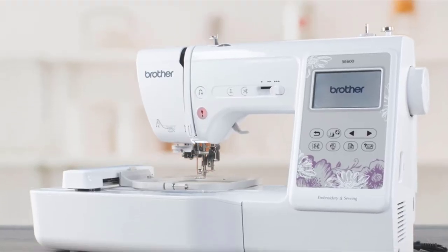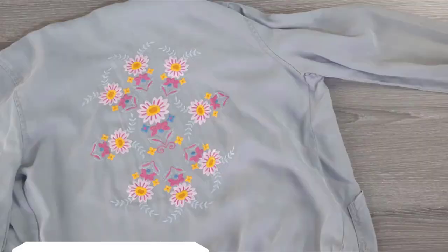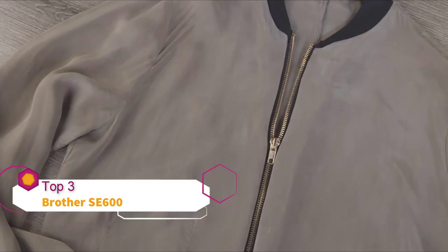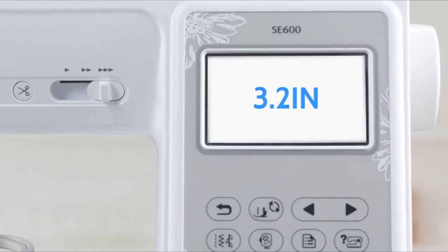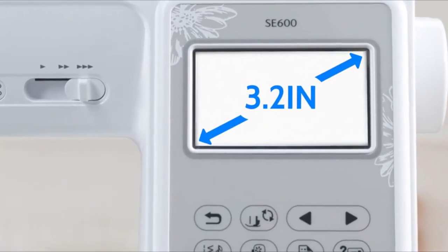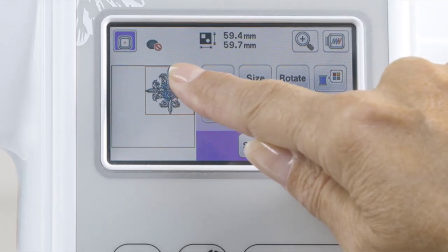Introducing the Brother SE-600, the 2-in-1 sewing and embroidery machine designed to fuel your creative projects for years to come. Get more control with the SewSmart Color LCD touchscreen display. Easily position your embroidery designs with just a touch of your finger.